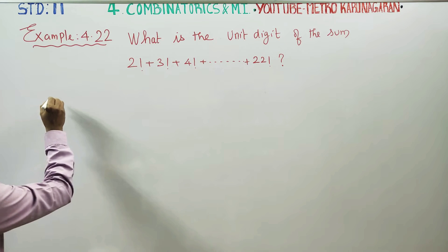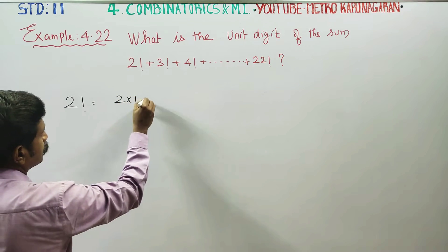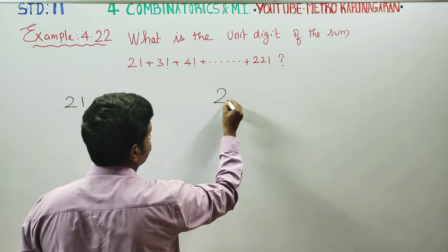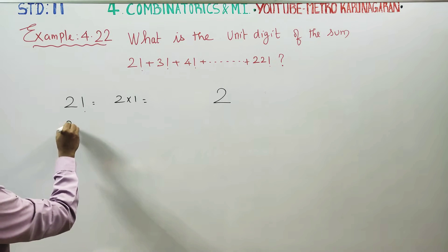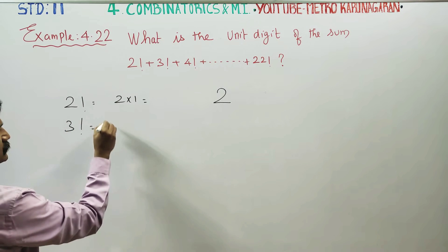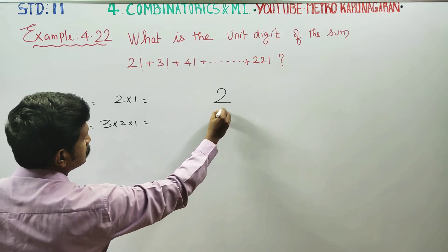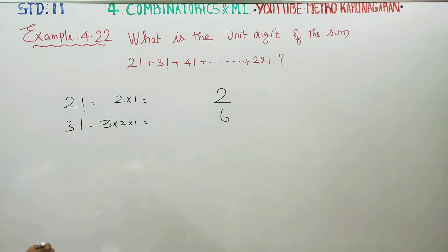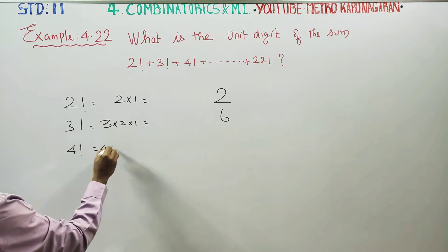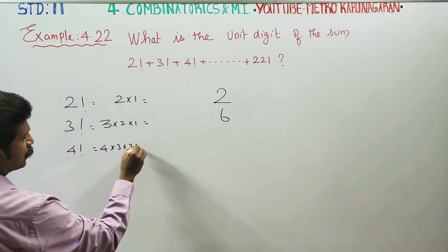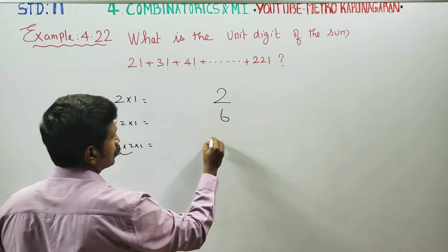First of all, 2 factorial is 2 into 1, therefore the answer is 2. 3 factorial is 3 into 2 into 1, the answer is 6. Again, 4 factorial is 4 into 3 into 2 into 1: 4 times 3 is 12, times 2 is 24.